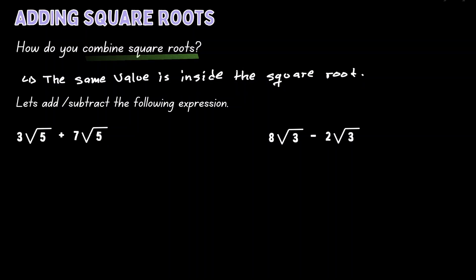The values that we add are 3 and 7. If you have 3 square roots of 5, and then we add 7 square roots of 5, then we are going to obtain 10 of those square roots of 5.